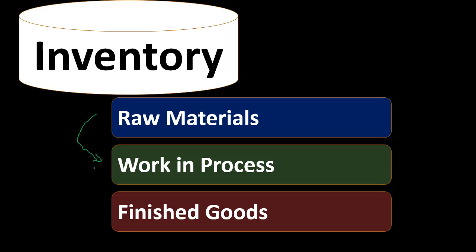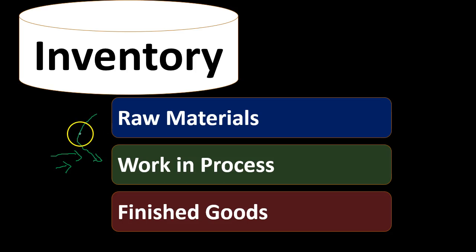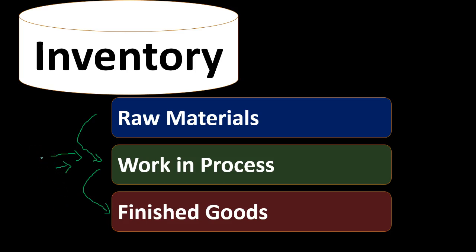Within work in process, it's not just the raw materials — we're also going to include direct labor and overhead. So as you think of these three components of inventory, the raw material flows into work in process, and within that work in process stage it's not just raw materials but also direct labor and overhead. Then that is all converted to finished goods.